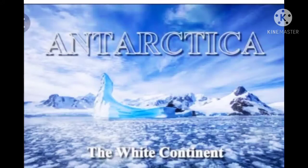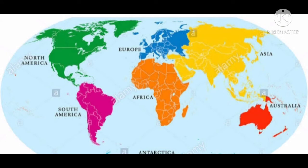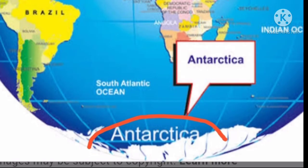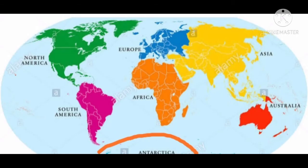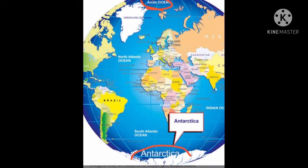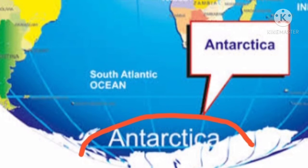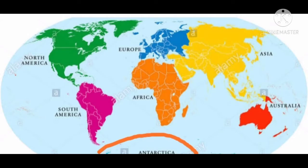Hello children. We have finished learning about the continent of Australia. The next continent to learn this academic year is Antarctica, the White Continent. In this lesson, we are going to learn about the location, extent and physical setting, and physical features. Natural vegetation has been dropped this year, so we will only learn about the important research stations of Antarctica.